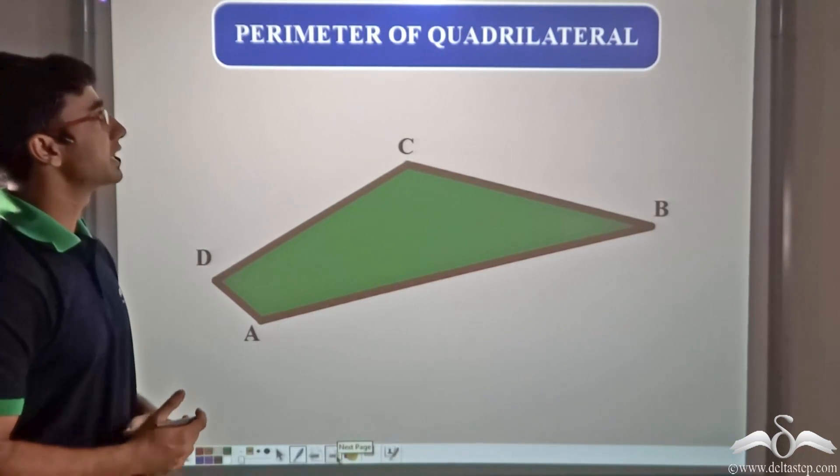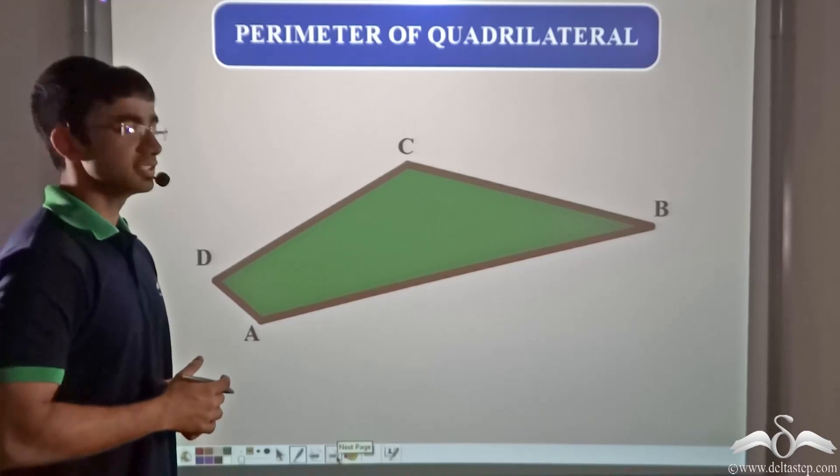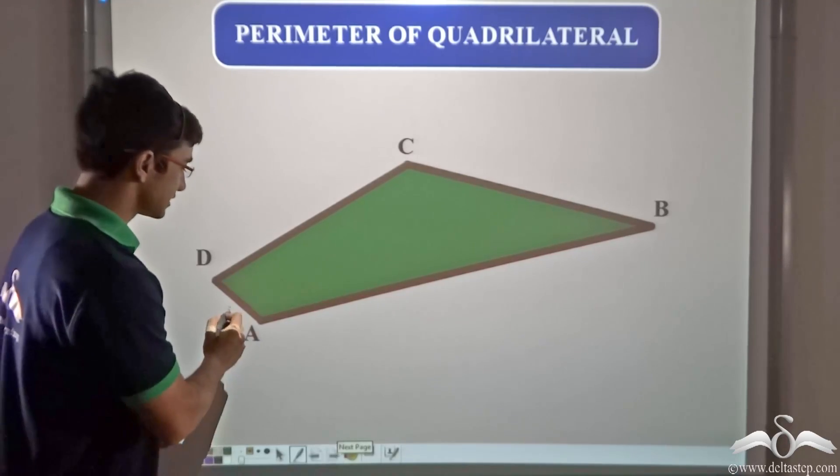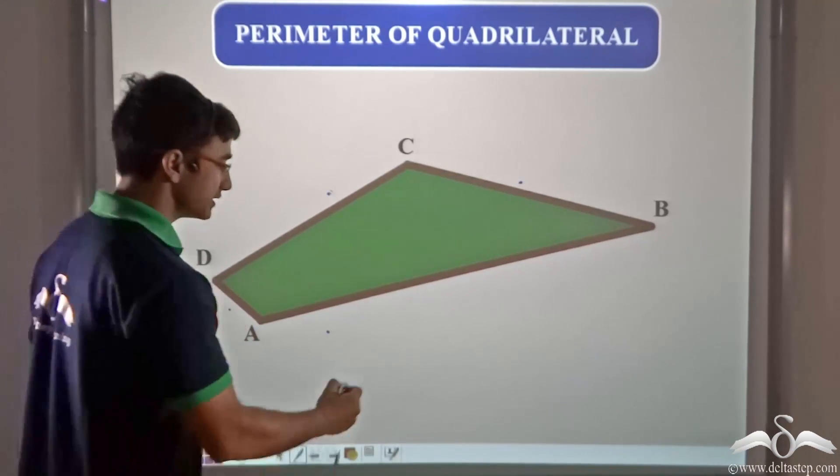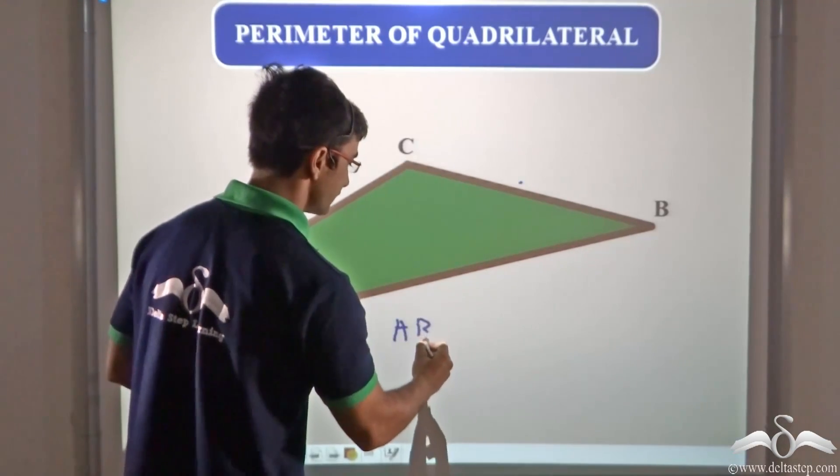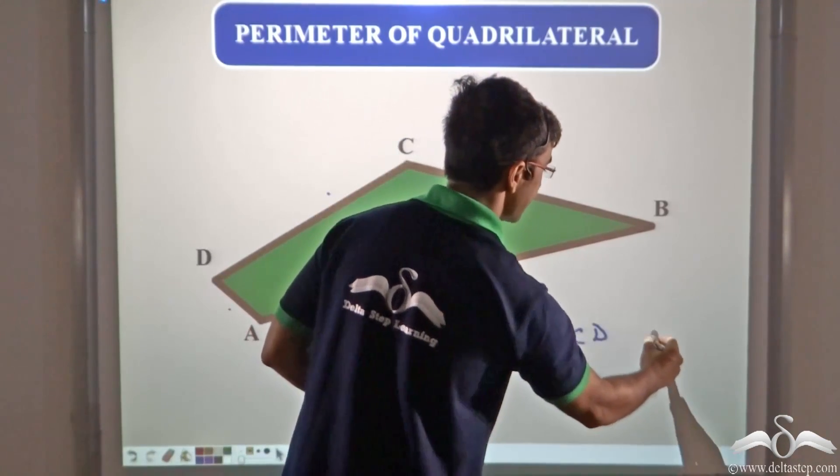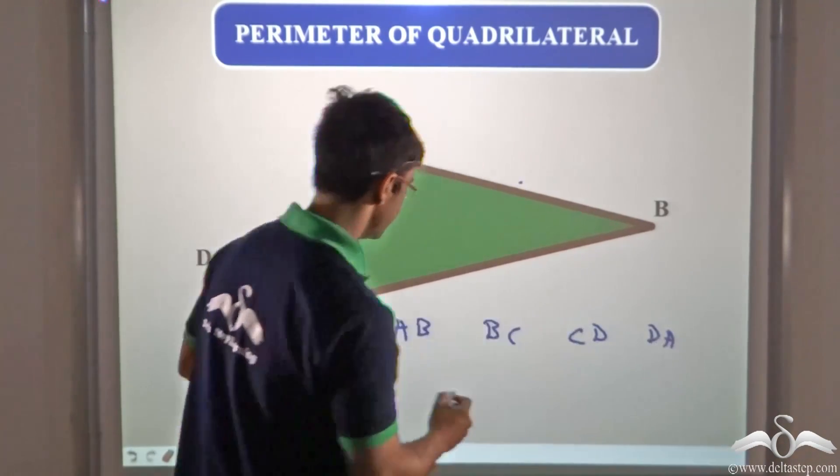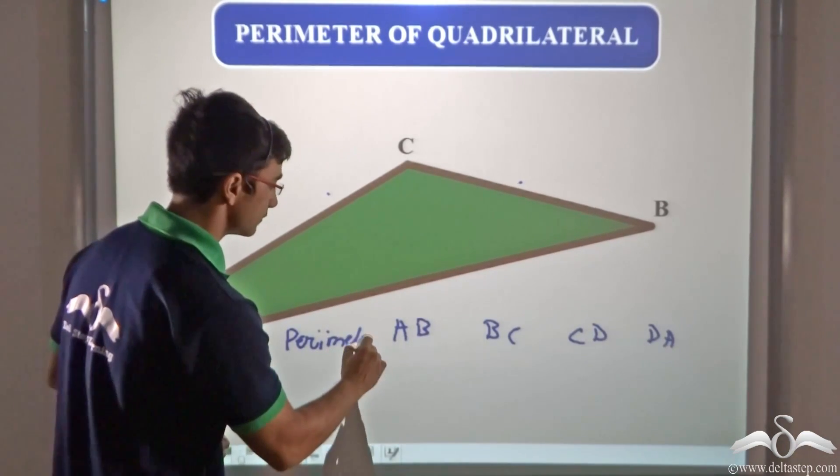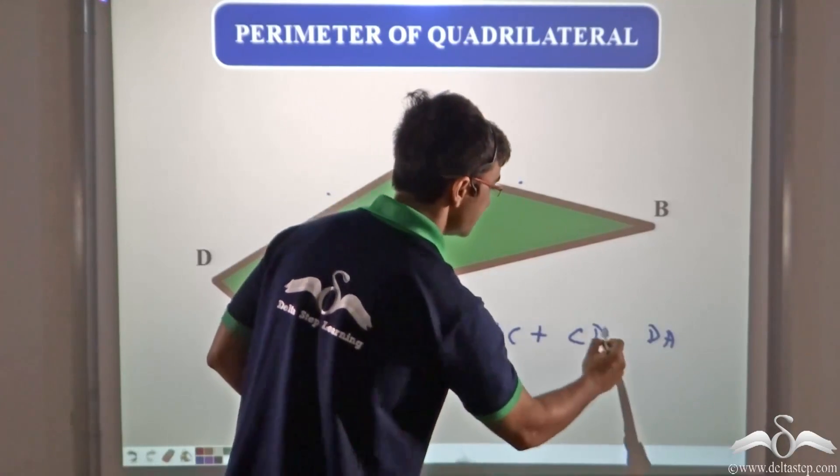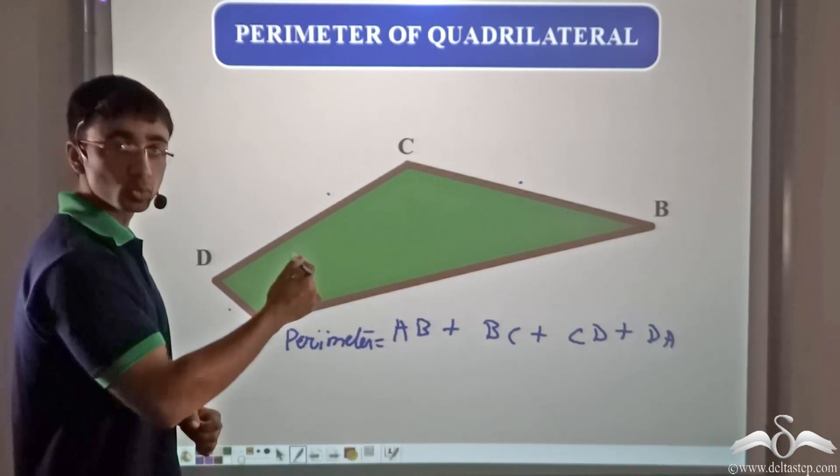Firstly, we have to find out the perimeter of the quadrilateral. Now the perimeter of the quadrilateral is nothing but the sum of lengths of all the four sides. So if we have been given the lengths of AB, BC, CD, and DA, then we can easily find out the perimeter as AB plus BC plus CD plus DA. How can we prove this?